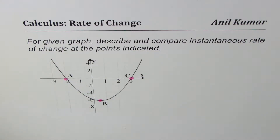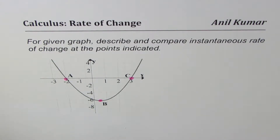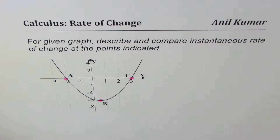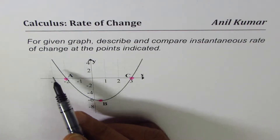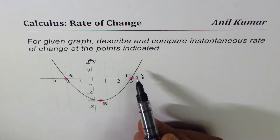I'm Anil Kumar. We are exploring the rate of change and preparing for calculus. The question here is: for a given graph, describe and compare the instantaneous rate of change at the points indicated. We are given a parabola which opens upwards.